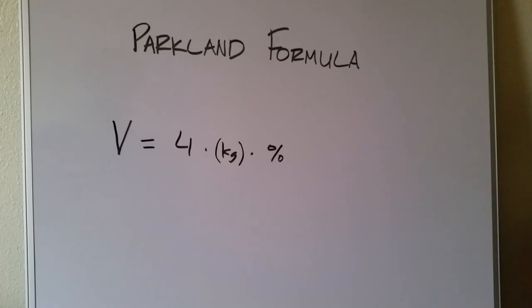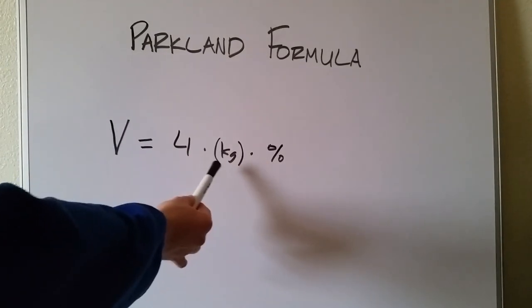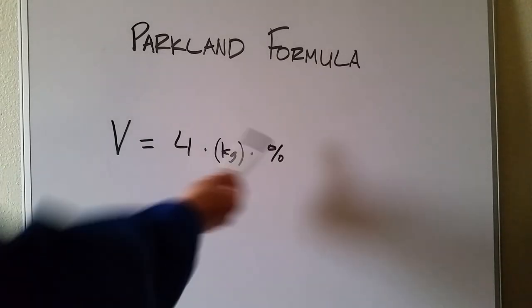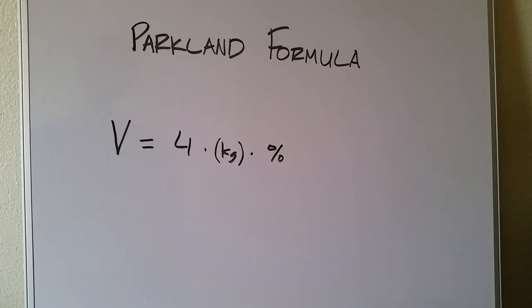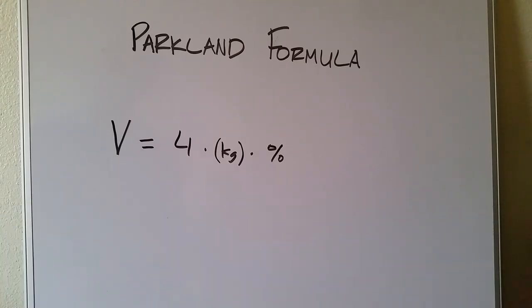First responders, ER physicians, and ICU physicians have different ways to remember this, but the gist of it is four times the mass of the patient in kilograms — which you can sometimes round or guesstimate — times the percentage of total body surface area burned by second or third degree burns. That gives you a volume in milliliters that needs to be replaced.